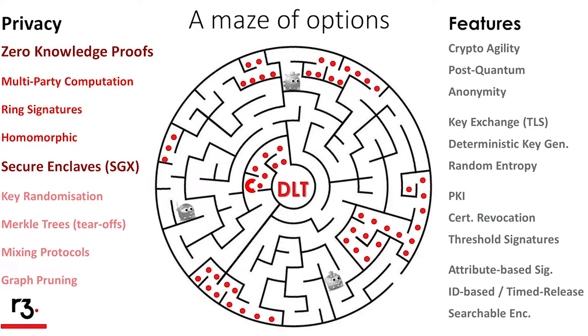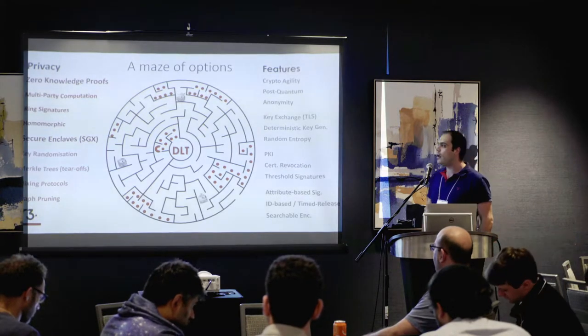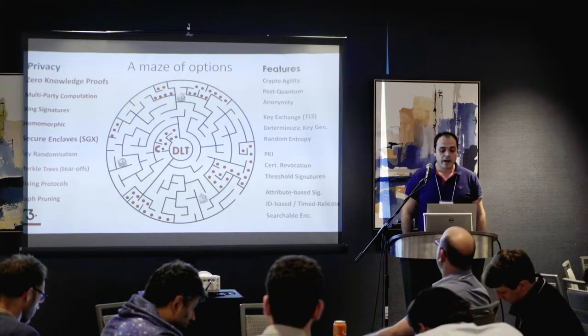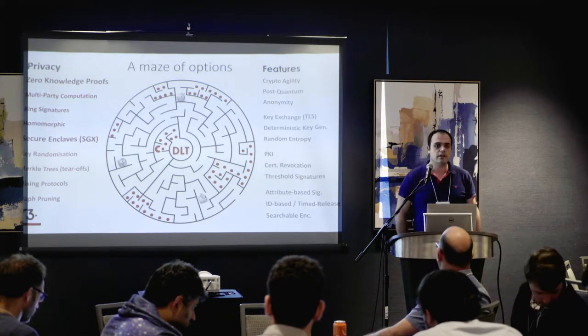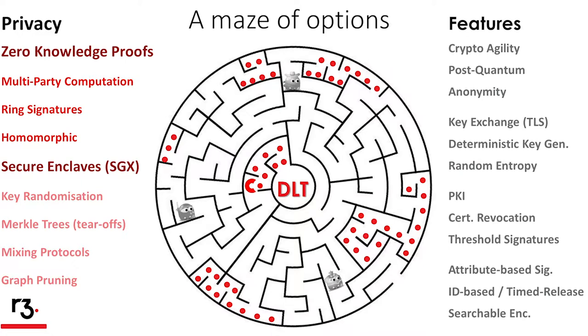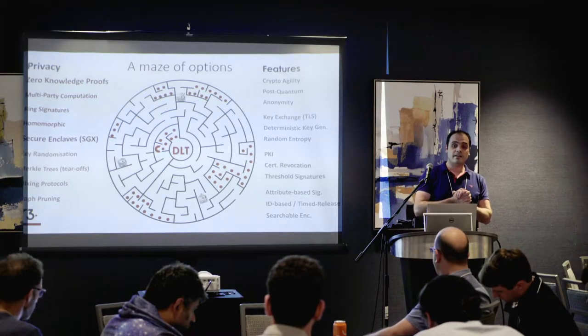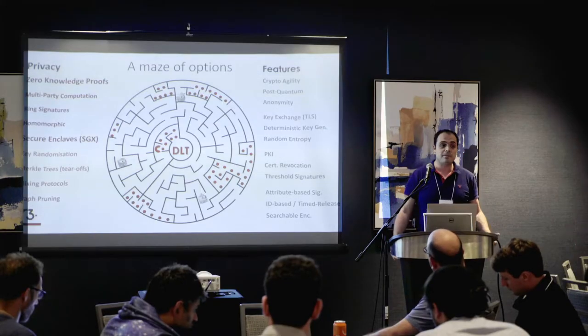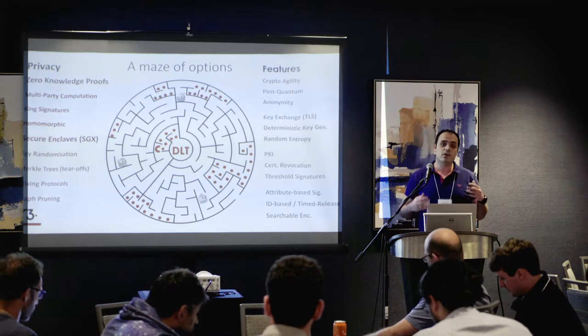When we started working on privacy and cryptographic features, we had to evaluate many different techniques. One was zero-knowledge proofs. R3 was created in 2016, and at that time only Zcash used ZKPs in practice. The problem is that clients and banks cannot use a product if it's not standardized by FIPS or similar bodies — and there is still no standardization even for pairing-friendly curves. This sometimes makes zero-knowledge proofs unusable.